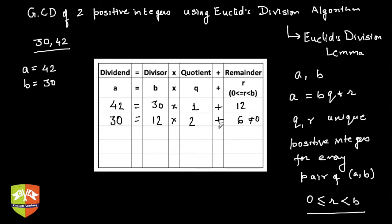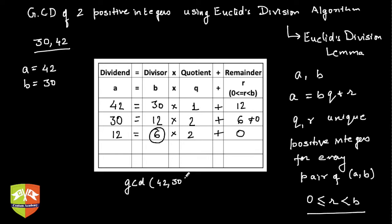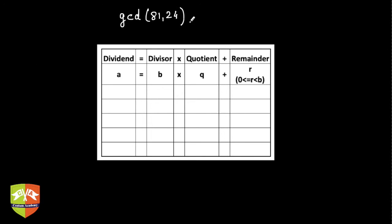Now check: is the remainder 0? The remainder is not equal to 0, so we repeat the process. The previous b becomes the new a, so 12 is the new a, and the previous R becomes the new b, so this is 6. How many times does 6 go into 12? Two times. So 6×2 is 12 and the remainder is 0. The moment we arrive at 0, the divisor in that step becomes the GCD. So GCD of 42 and 30 is 6.